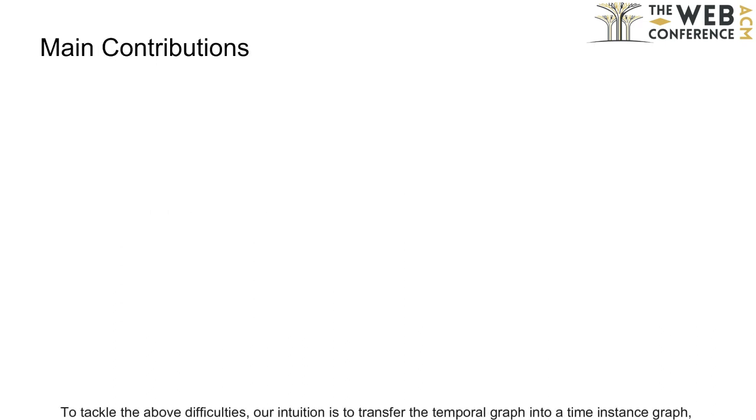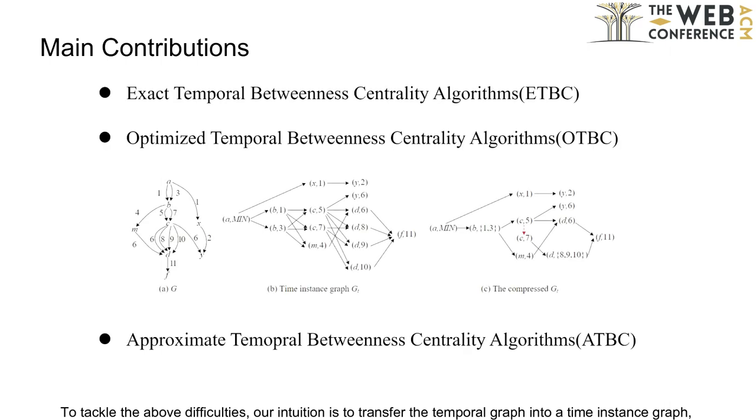To tackle the above difficulties, our intuition is to transfer the temporal graph into a time instance graph, and we derive a new recursive temporal dependency formulation and present an exact algorithm ETBC to compute the temporal betweenness centrality values. To reduce the scale of the time instance graph and thus speed up the computation, we further design a lossless compression method that compresses the time instance graph with equivalent vertices and edges, and then propose an optimized calculation theory and the optimized algorithm OTBC.